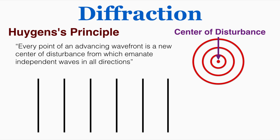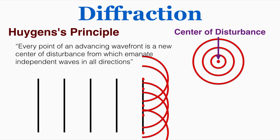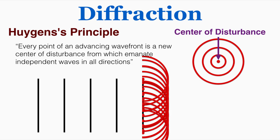What Huygens principle is saying basically is that if you take every single point in a straight line wave and model it as a center of disturbance, the waves radiating from all those centers of disturbance perfectly cancel out to make the shape of the wave you're trying to predict. So here that's just going to be another straight line — that's where the next wavefront will occur.